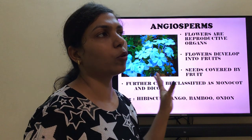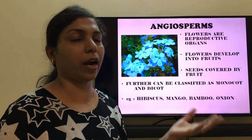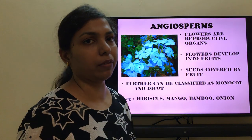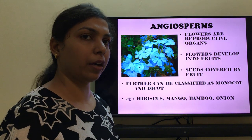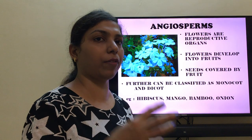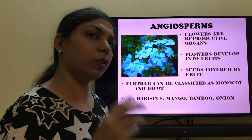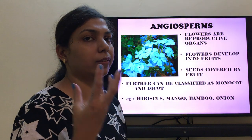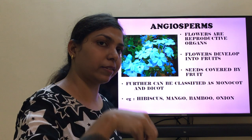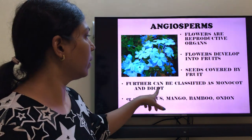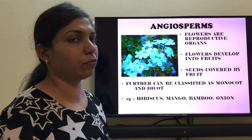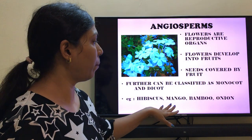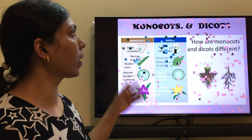Angiosperms are most of the plants we see in our gardens and are the most common group. In these plants, flowers are the reproductive organs and help in the process of reproduction. Flowers develop into fruits — the flowers mature and later develop into the fruit of the plant. The seeds are covered by the fruit; the seed is present inside the fruit. These can be further classified as monocot and dicot. Examples include hibiscus, mango, bamboo, onion, and many others.